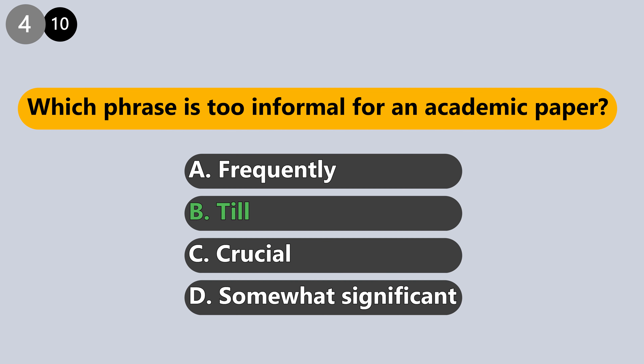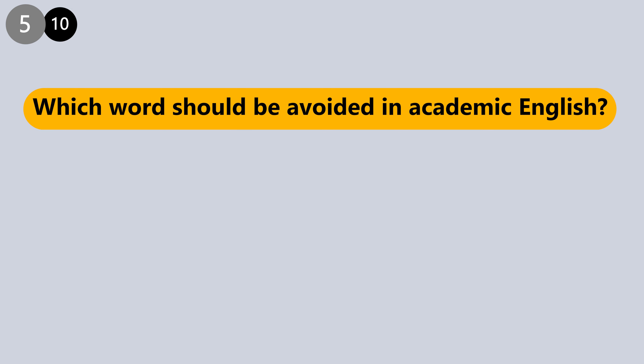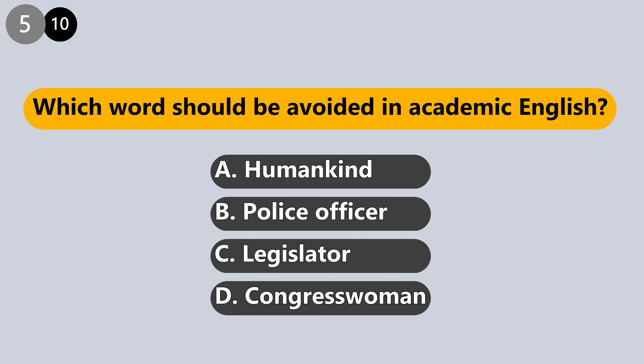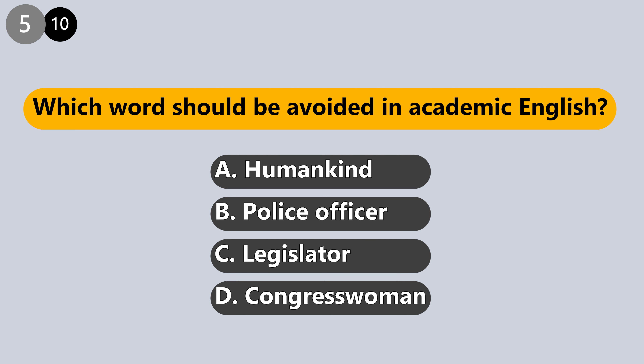Is it humankind, police officer, legislator, or congresswoman? The answer is: congresswoman. Academic English requires only gender-neutral words. For example, congressperson.